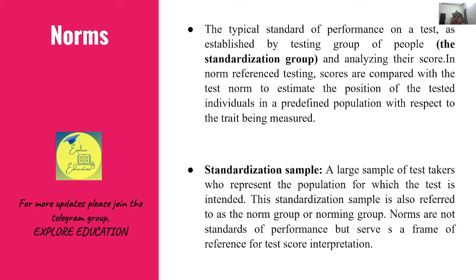The typical standard of performance on a test is established by testing a group of people — this standardization group, or norming group, or standardization sample — से निकल कर आ रहा है। उससे हम अपने विशयी के score की analysis करते हैं। In norm-referenced testing, scores are compared with the test norm to estimate the position of the tested individuals in a predefined population with respect to the trait being measured.